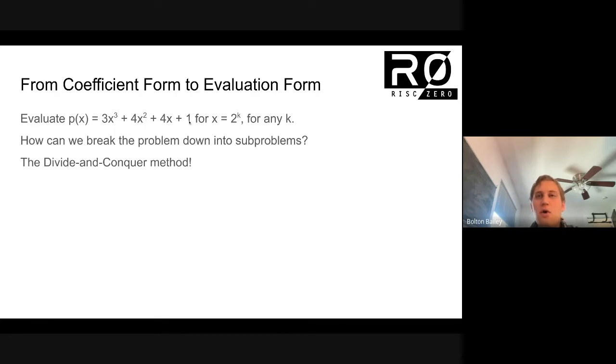One way that might occur to you is that maybe we can take the coefficients from P—we can take three, four, four, and one, and we can make new polynomials, smaller polynomials out of those coefficients. And that turns out to be the critical trick.